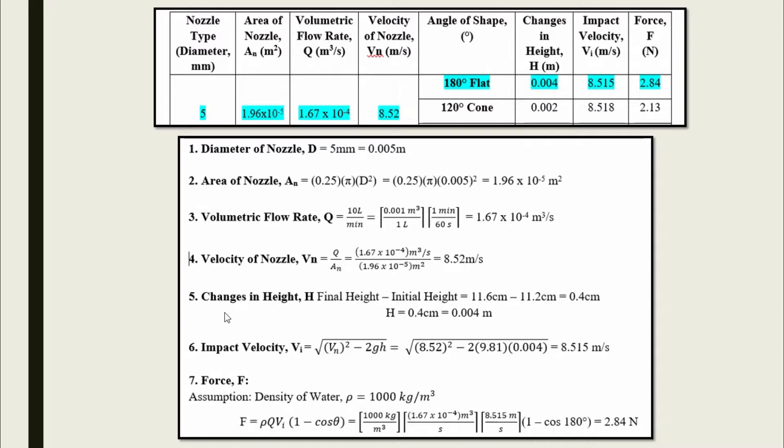The fifth step is the change in height, the measured value that we obtain from the experiment. Next, we can calculate the impact velocity by using this formula. Lastly, we need to calculate the force.